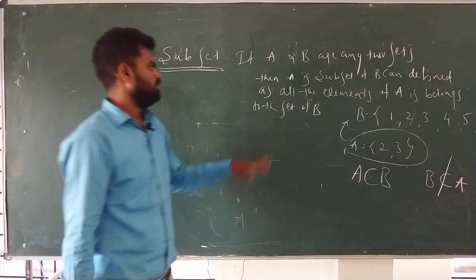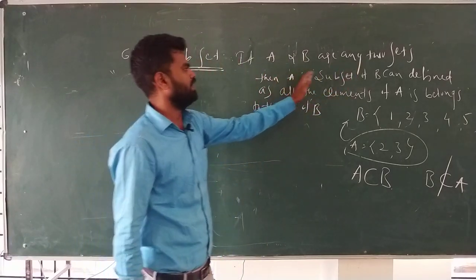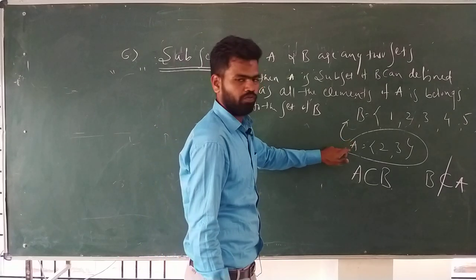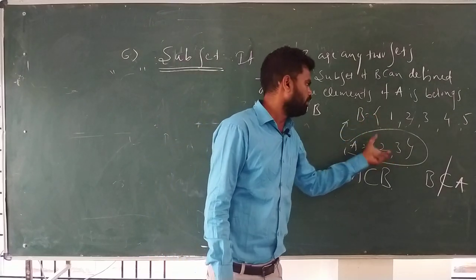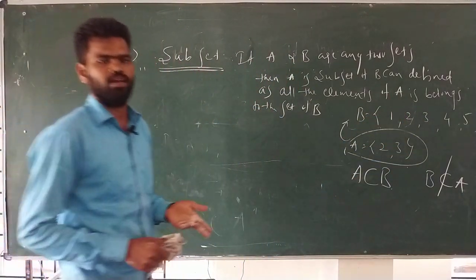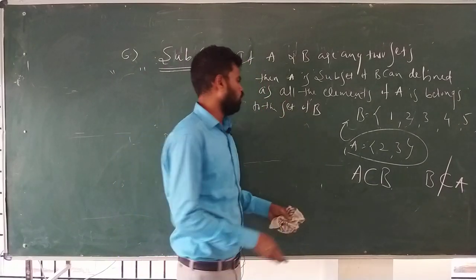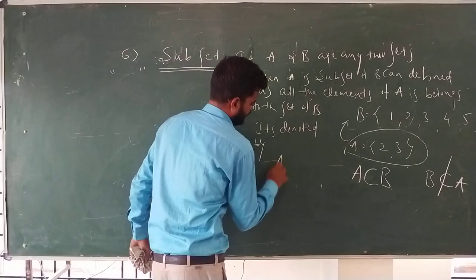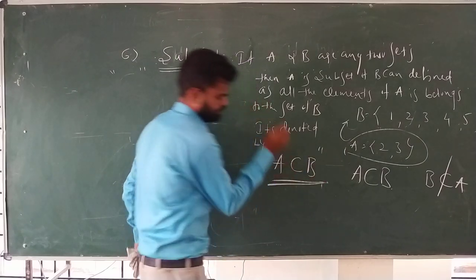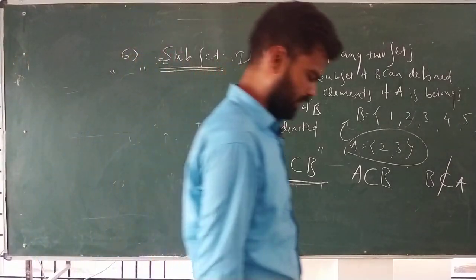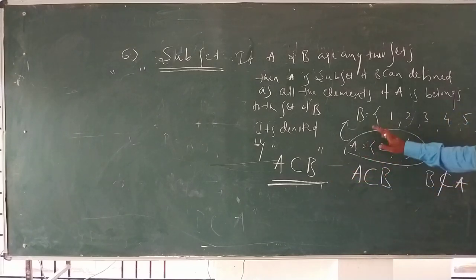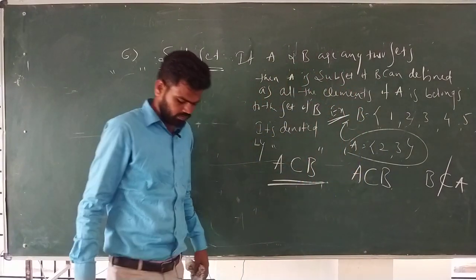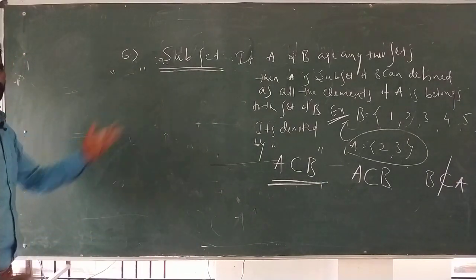To summarize: if A and B are any two sets, then A is a subset of B — defined as all the elements of set A belonging to set B. It is denoted by A ⊆ B. This is the definition of subset.